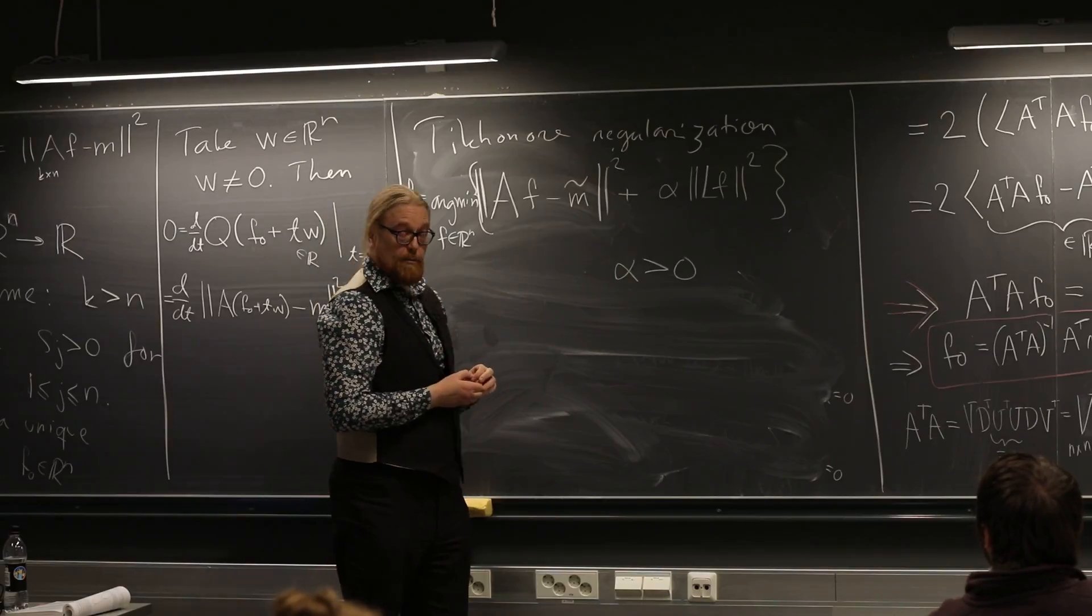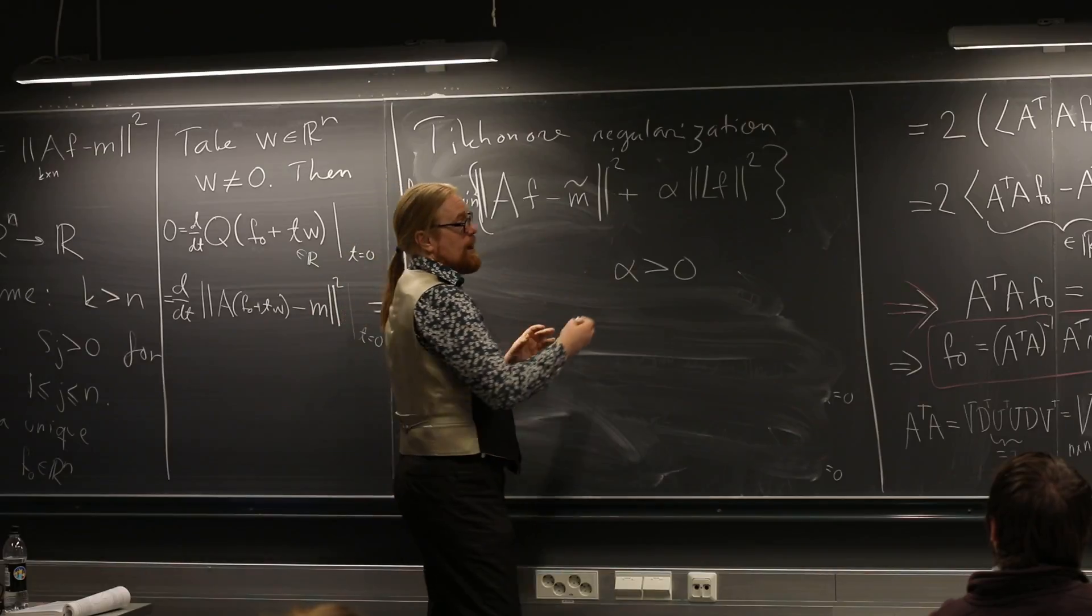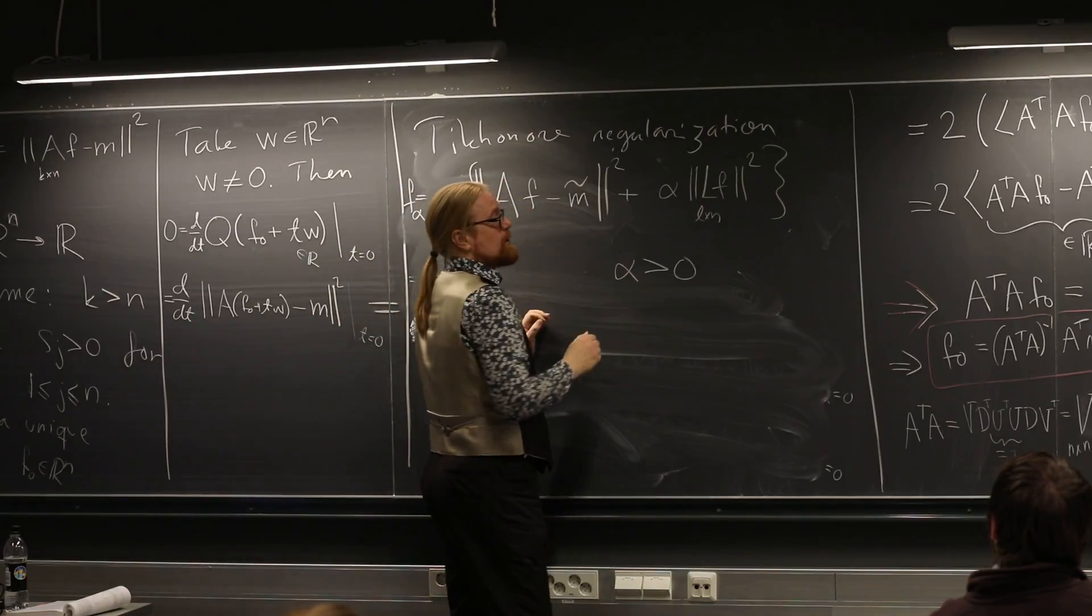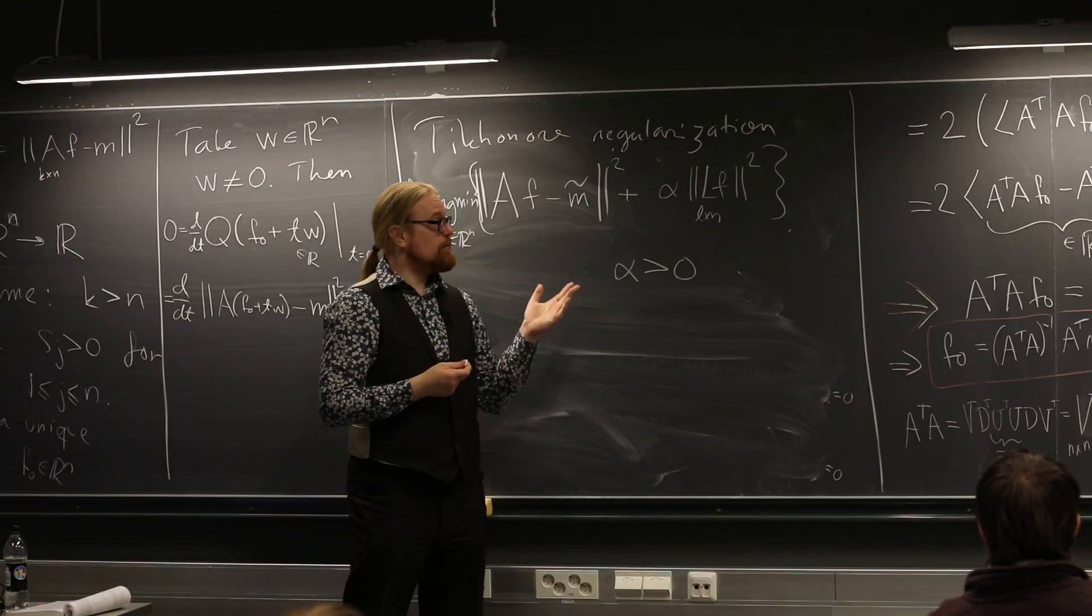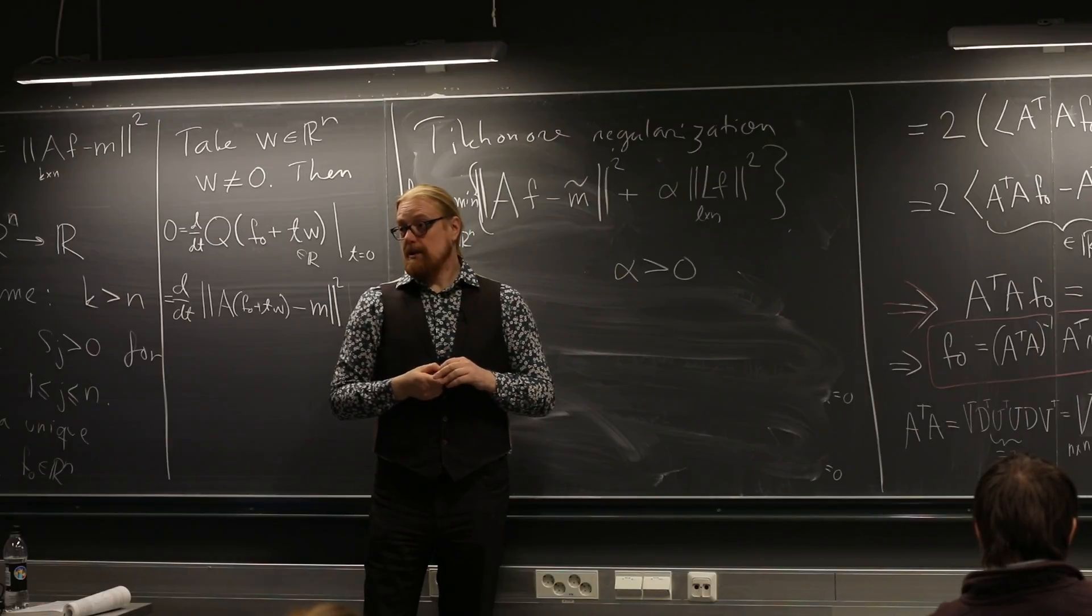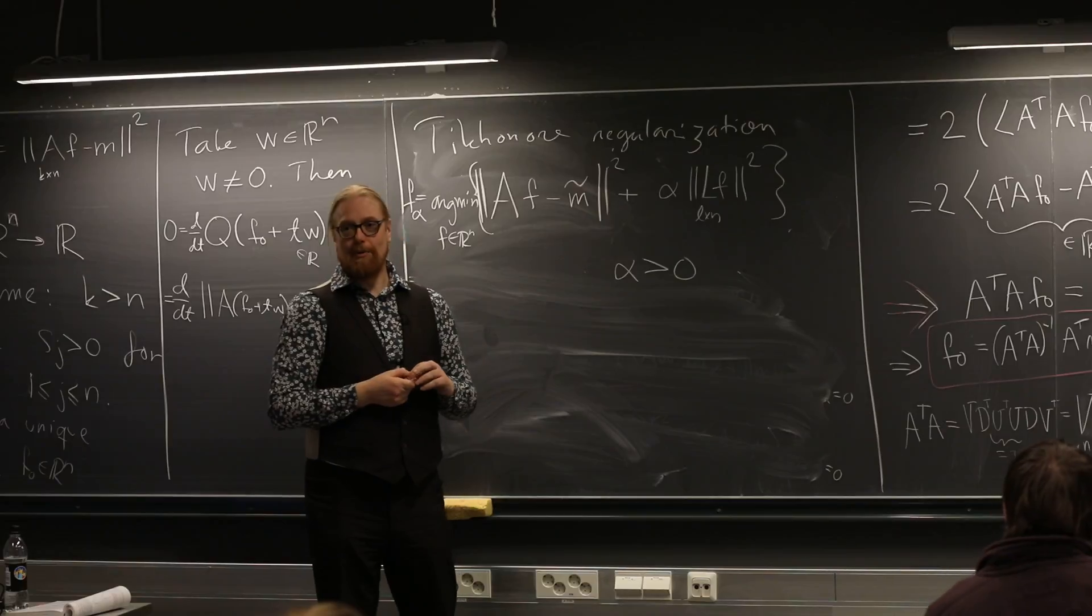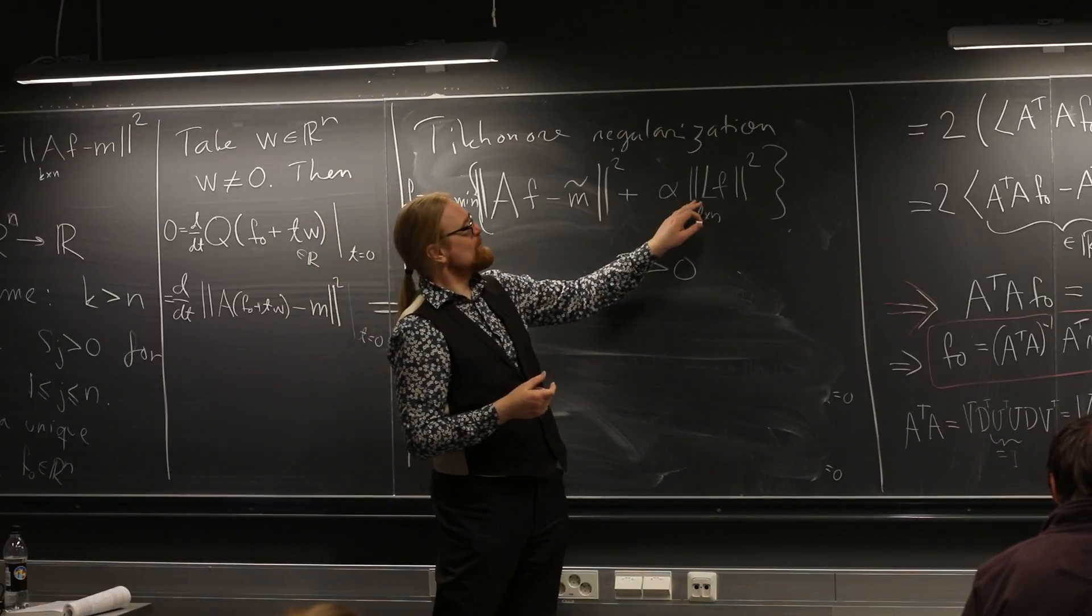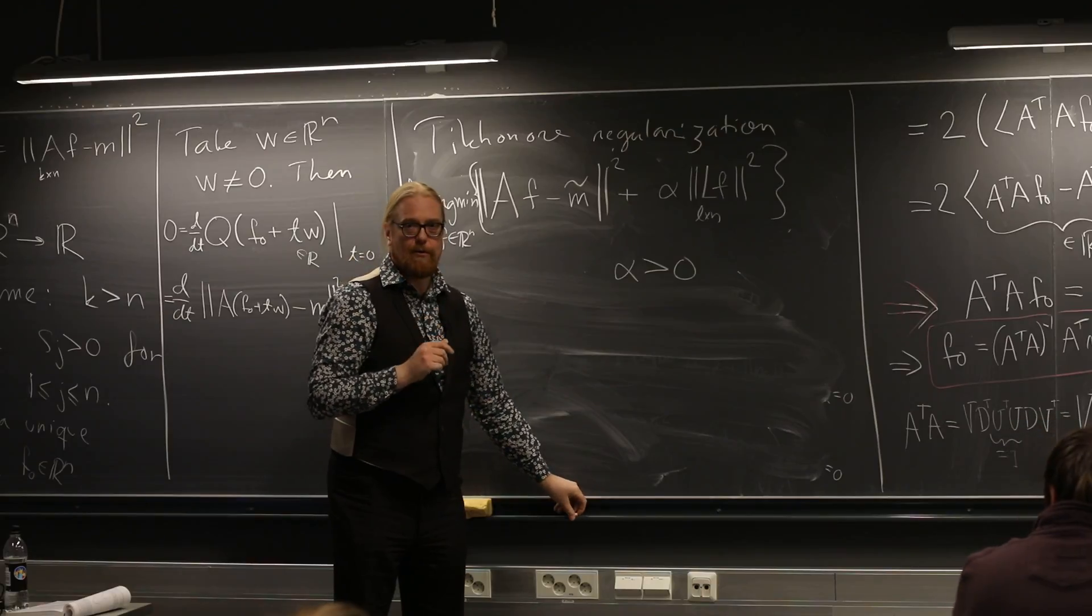So L is an n by n matrix? L, usually, many times it's an n by n matrix, but actually it can be some kind of L by n matrix. The number of penalties can be smaller or larger than the elements of f. And actually in the next exercises, I will treat you with some choices of the difference matrix there with a couple of different sizes.